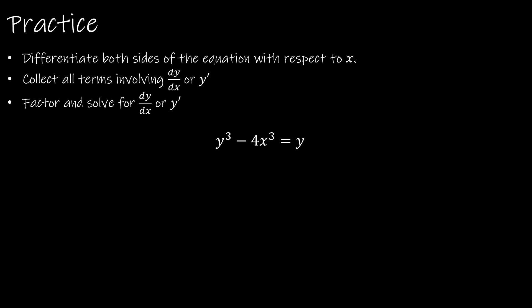Here's a practice problem: y cubed minus 4x cubed equals y. Why do I need implicit differentiation? Because I can't isolate y on one side. Differentiating: the derivative of y cubed is 3y squared — that's the power rule — and then chain rule gives y prime. For the x term: minus 12x squared, no extras. The derivative of y is 1, and since it's a y, multiply by y prime.